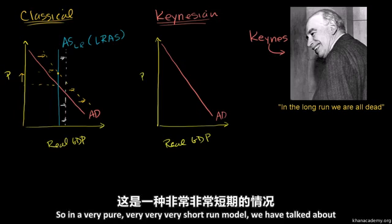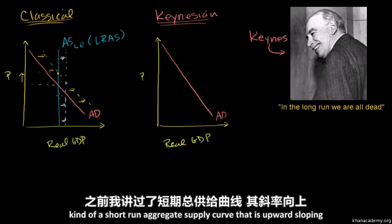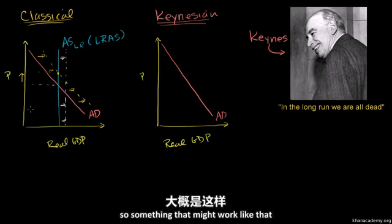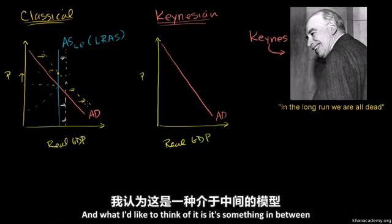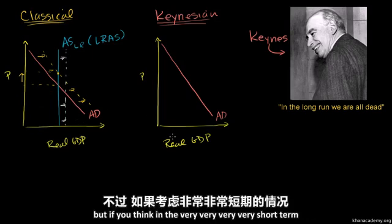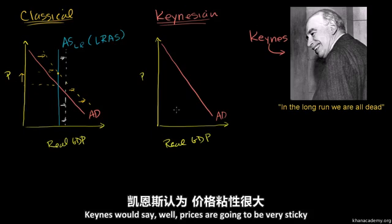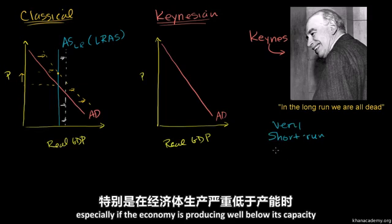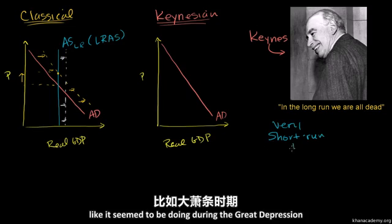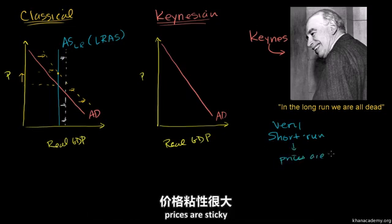In a very pure, very short run model — and we have talked about a short-run aggregate supply curve that is upward sloping — that is actually starting to put some Keynesian ideas into practice. But if you think in the very, very short term, Keynes would say prices are going to be very sticky. Especially in the short run, especially when the economy is producing well below its capacity, like it seemed to be doing during the Great Depression — prices are sticky.